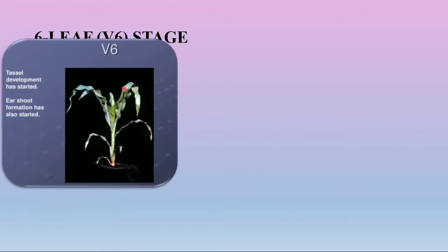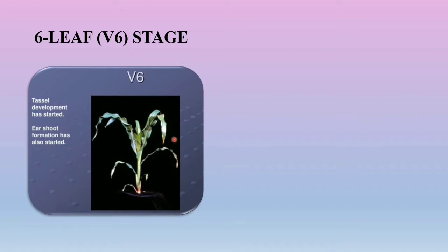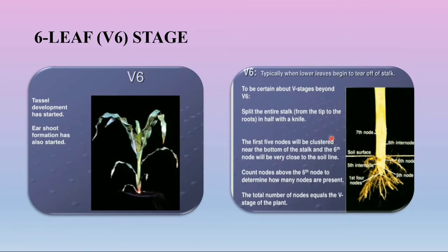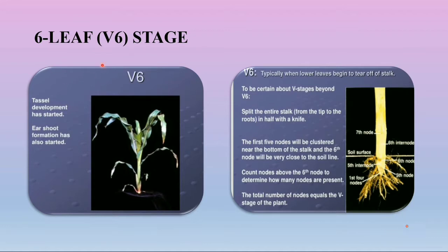In the sixth leaf stage (V6), the collar of the sixth leaf is visible, occurring approximately 3 weeks after emergence. The growing point and tassel are now above the soil surface, making the plant more vulnerable to hail or freeze. The permanent root system is now the primary root system and extends approximately 18 inches. Tillers may develop at this stage and internode elongation also occurs. Continue to check roots for eastern corn rootworm larvae and check for small colonies of bank grass mites, which may affect the crop at this stage.